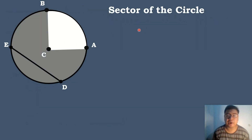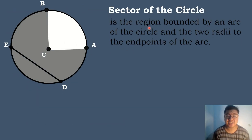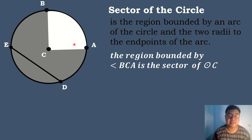Next, let's have the sector of the circle. When we say sector of the circle, it is the region bounded by an arc of the circle and the two radii to the endpoints of the arc. In this figure, the region bounded by angle BCA is the sector of circle C. The white portion of the circle is the sector of circle C.